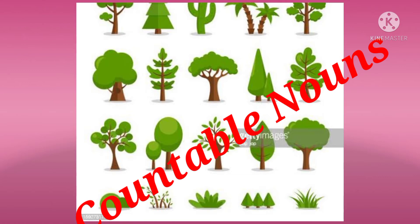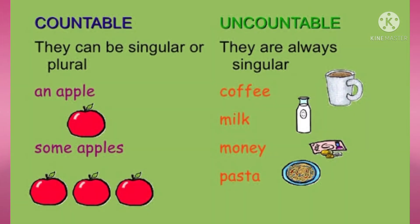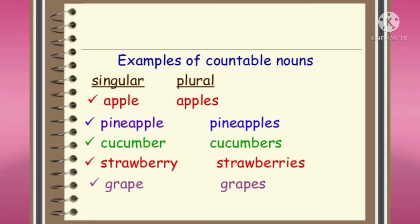Now we move on to the next topic: countable nouns and uncountable nouns. Countable nouns are nouns which can be counted — for example, an apple: one apple, two apples, three apples. Uncountable nouns are nouns we cannot count, such as coffee, milk, money, pasta. Uncountable nouns are used in the singular only, whereas countable nouns have both singular and plural forms — apple, pineapple, cucumber, strawberry, grape.